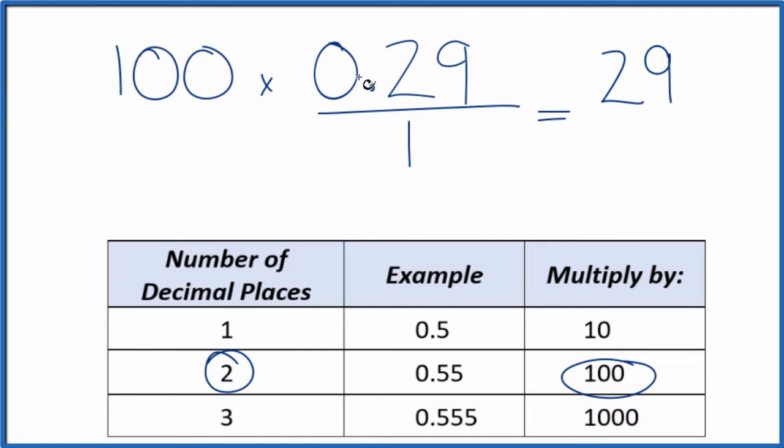But we can't just multiply the numerator by 100. We also have to multiply the denominator by 100. 100 divided by 100 is 1. So again, we're multiplying by 1 here. We're not changing the value, just the way it's written. So 100 times 1, that is 100, and we have our fraction.